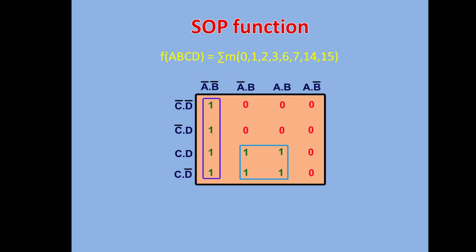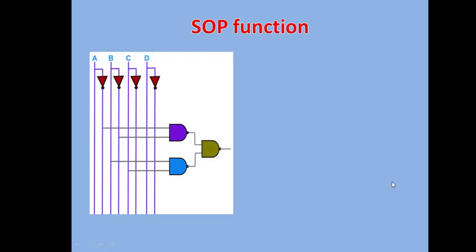If you want to learn K-maps, I'm sharing a link for a learning video — you can click that link at the top. We solve the K-map and get two quads. The equation for the two quads is A-bar and B-bar, OR B and C. This is the SOP expression we get. To implement this SOP function, we require a NAND-NAND combination.